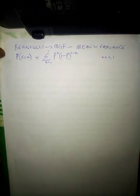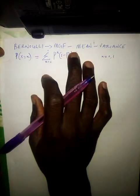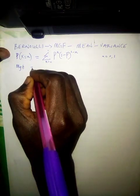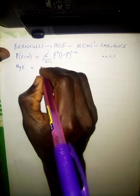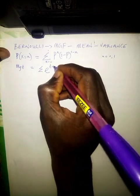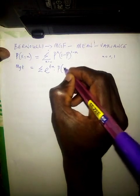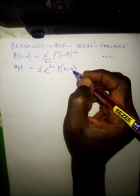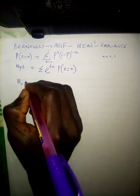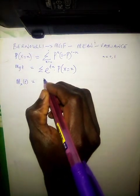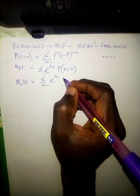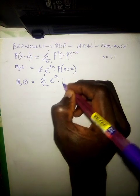The Bernoulli distribution can only take two values: 0 and 1. The moment generating function is given as M(t), which equals the summation of e^(tx) multiplied by the probability of this distribution. So we have M subscript X of t — which stands for moment generating function — equals the summation with x running from 0 to 1 of e^(tx) multiplied by the probability of x.